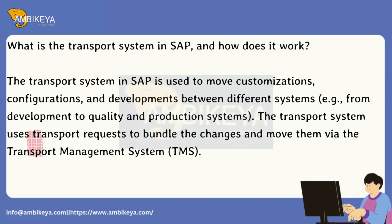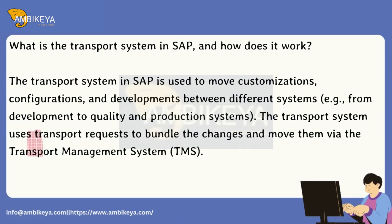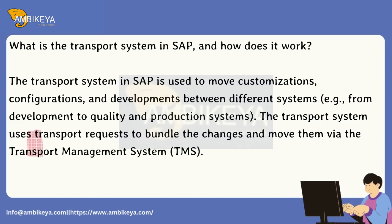What is the transport system in SAP and how does it work? The transport system in SAP is used to move customizations, configurations, and developments between different systems — for example, from development to quality and production systems. The transport system uses transport requests to bundle the changes and move them via the Transport Management System (TMS).